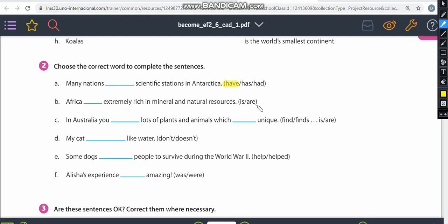So Africa, third person, but we are not going to use it because it's the verb to be. So Africa, singular, is extremely rich in mineral and natural resources. In Australia, you, you, it's in the second person, not third person, so I'm not going to add s. So in Australia, you find lots of plants and animals, which plants and animals, plural, so I can't use is, I have to use are, which are unique.